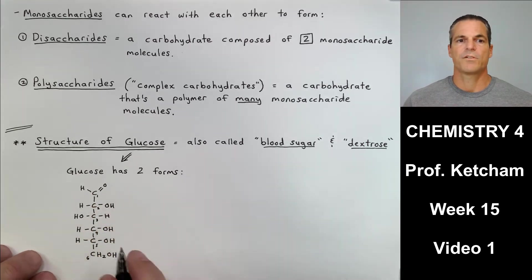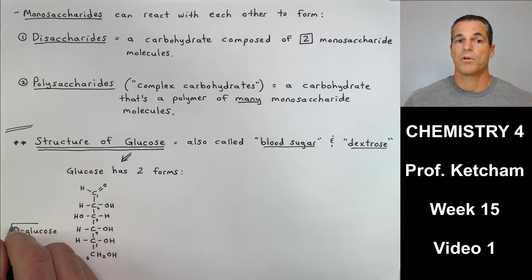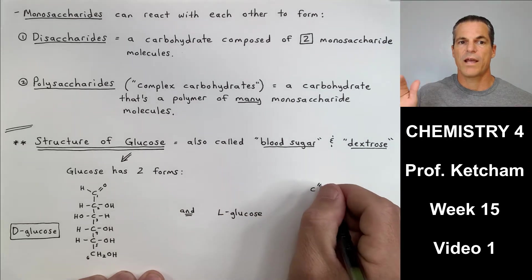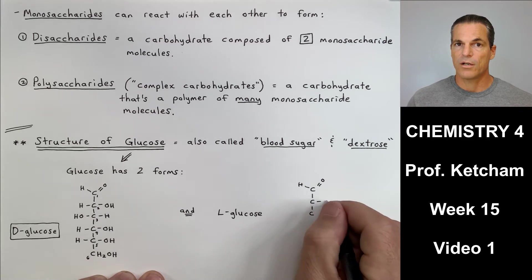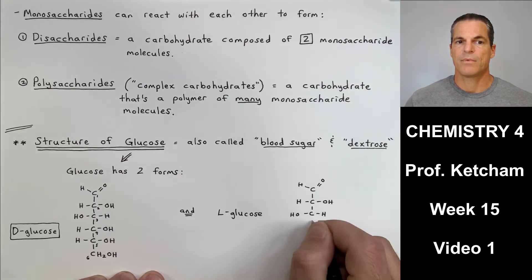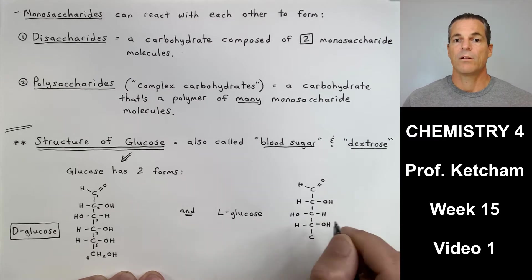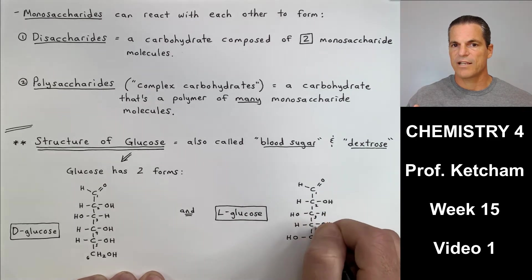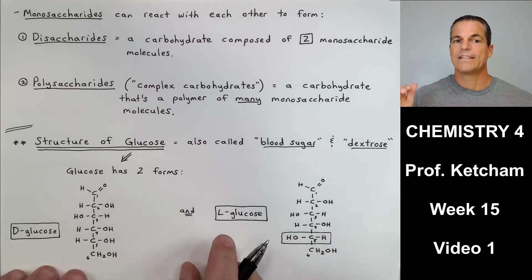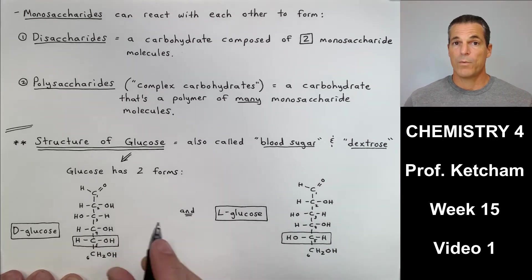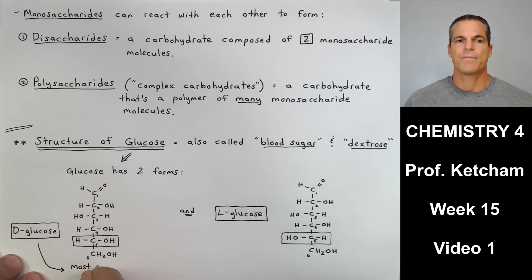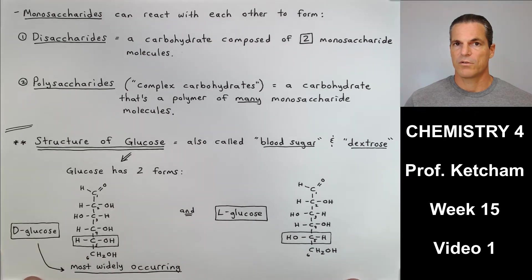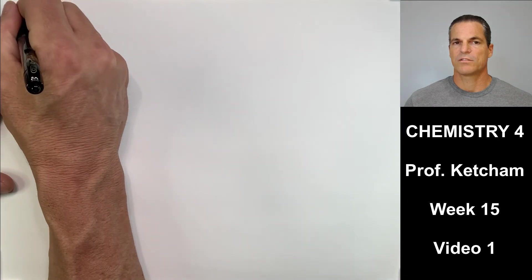Glucose has two forms. The first one I'm drawing is the same one I drew on the previous page. You got your right, left, right, right for carbons two through five. The OHs go right, left, right, right. This is D-glucose. You notice you got the aldehyde at the top, CH2OH on the bottom. L-glucose has the aldehyde on the top, CH2OH on the bottom at carbon six, but now it's right, left, right, left. So D-glucose is the one that we will focus on mainly in this class. It's the most common. D-glucose is when your carbon 5 OH group goes to the right. L-glucose is when the carbon 5 OH group goes to the left.